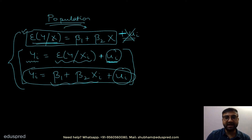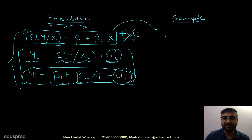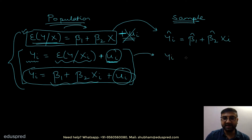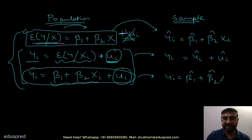Now let's talk about the three equations on the sample side. The counterpart of the first equation is: yi-hat equals beta 1 hat plus beta 2 hat xi. The counterpart of the second equation is: yi equals yi-hat plus ui-hat. And the counterpart of the third equation is: yi equals beta 1 hat plus beta 2 hat xi plus ui-hat. These are the three equations on the sample side.